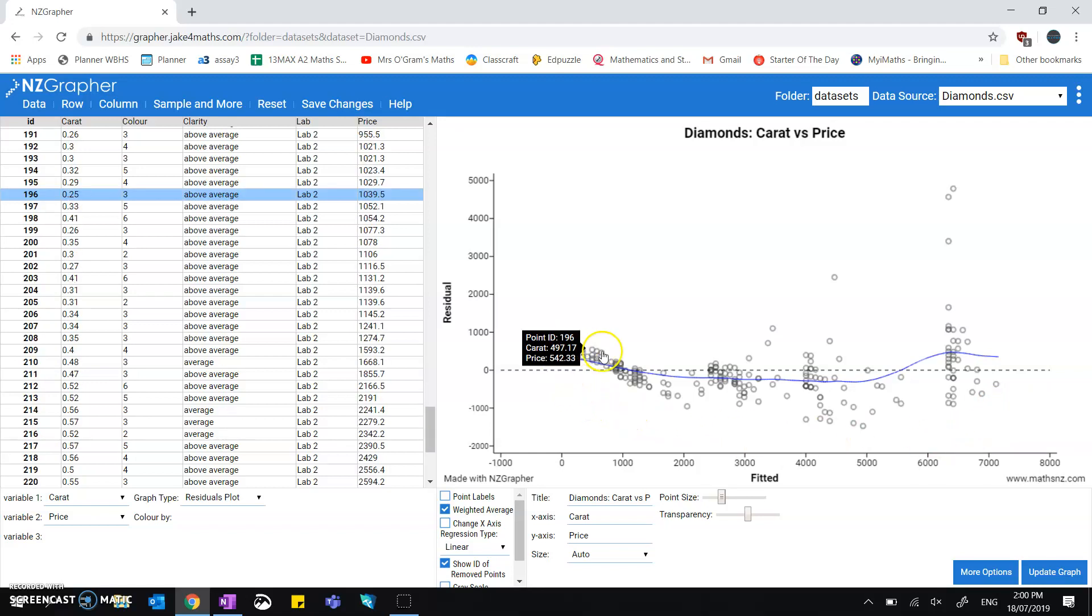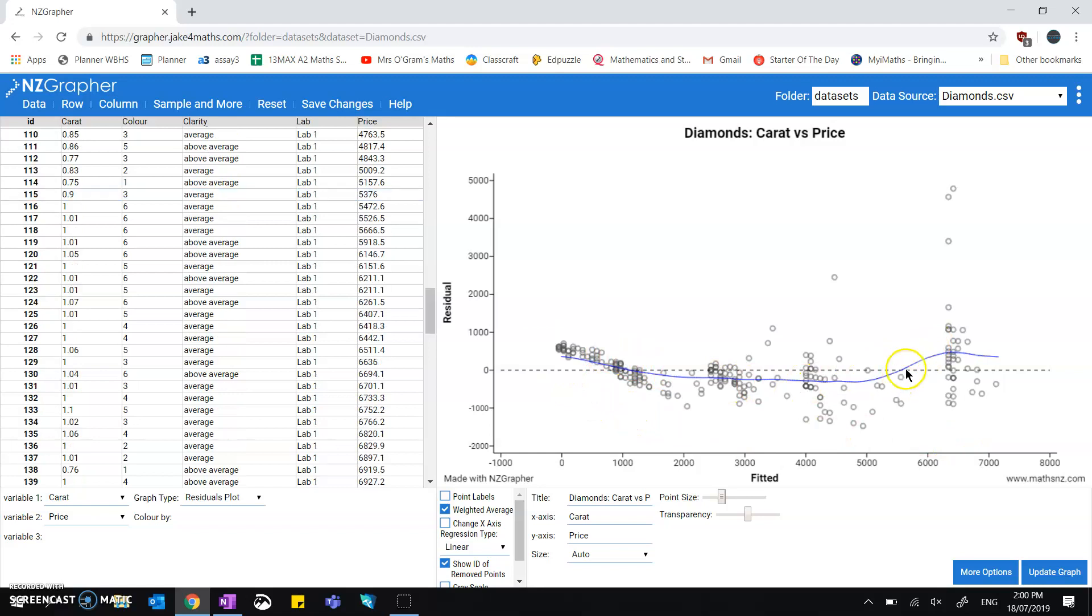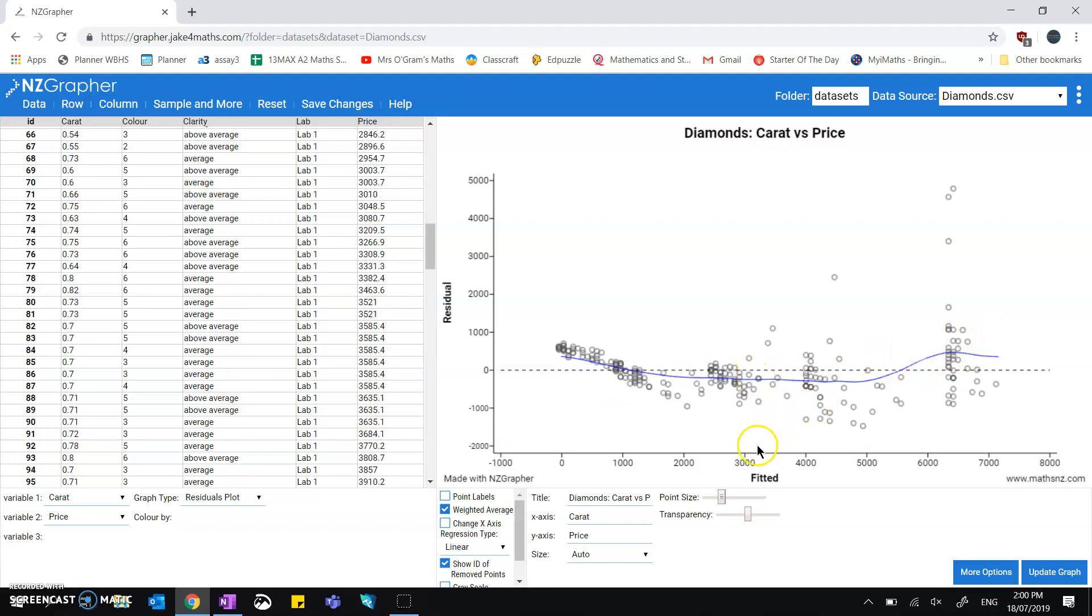If it follows a clear distinct pattern like this one is looking like it's predicting too high at the ends and too low in the middle, then you might want to consider a different type of model which we talked about in the other videos. If you have considered a different type of model, if you've gone piecewise, you could upload those two separate bits of data separately and do the residuals for both of those.